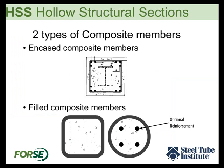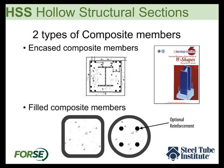When we're talking about composite members, we're really looking at composite columns or beam-columns. There are two main types of composite members, though in reality there is a third very common type — a beam that is composite with a slab on top — but we won't be discussing that configuration. We also won't be talking about encased composite members; AISC design guide number six deals specifically with encased wide flange members that also have reinforcement.